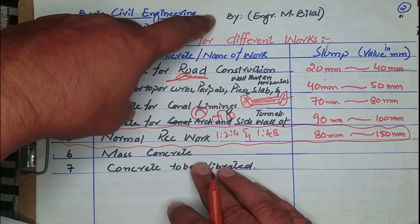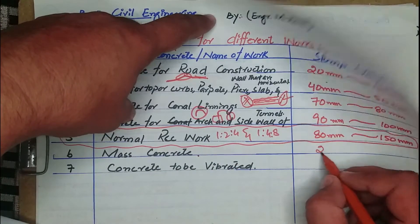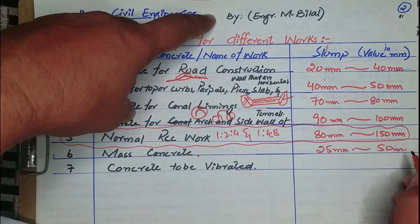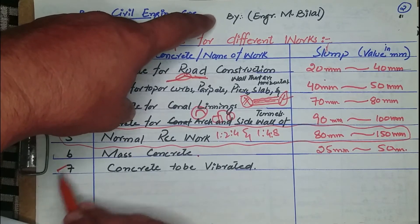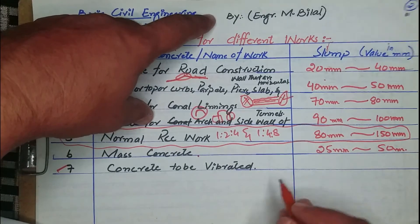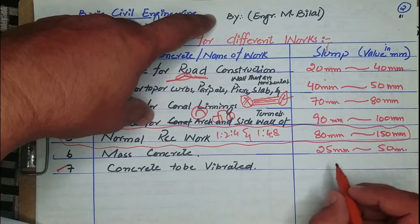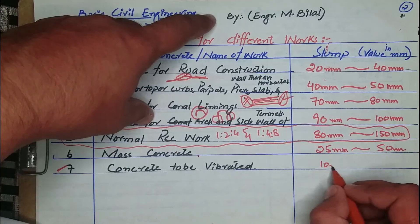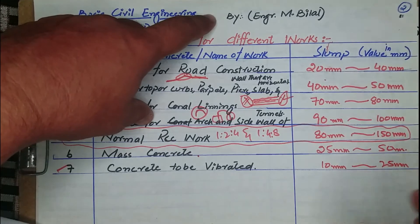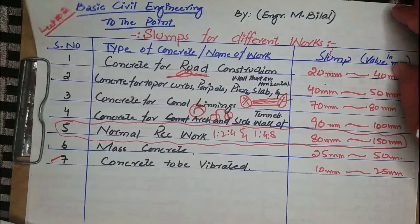The sixth one is mass concrete, with a slump value in the range of 25 mm to 50 mm. The last one is concrete to be vibrated, where the minimum slump value is 10 mm and the maximum slump value is 25 mm. This topic is very important for practical work.